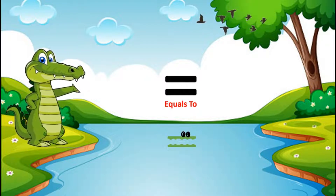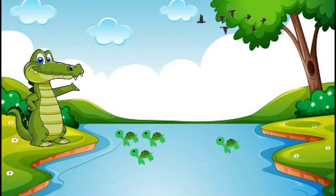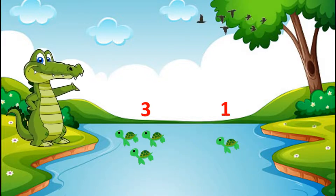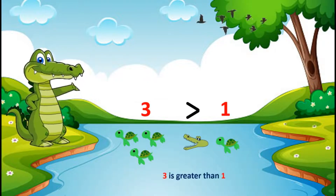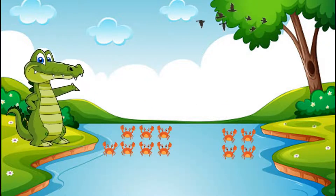On the left side there are one, two, three turtles and on the right side there is one turtle. As we know, three turtles are more than one turtle, so my mouth will be opened towards the bigger number three. Hence, three is greater than one.